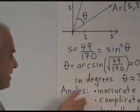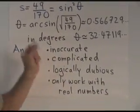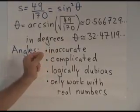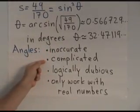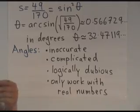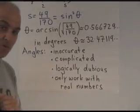In summary, angles are inaccurate because we're always forced to use approximations. The whole theory is complicated and really relies on calculus. It's logically dubious.